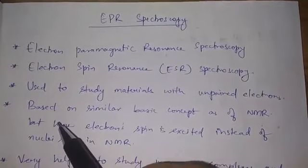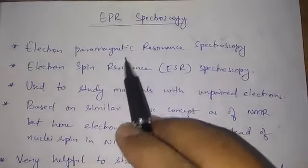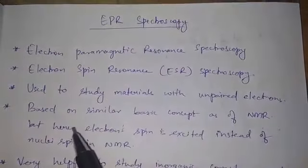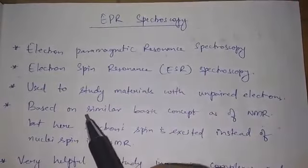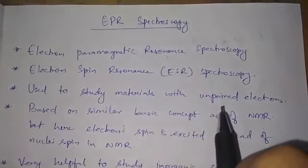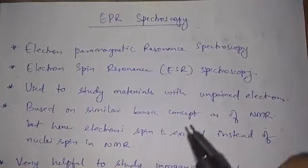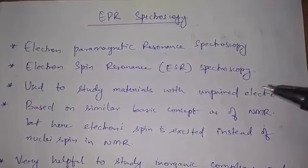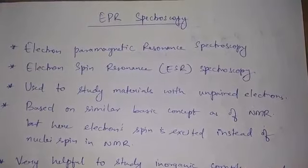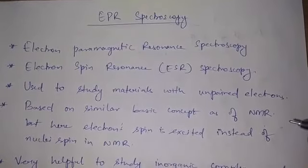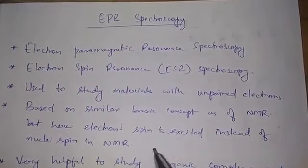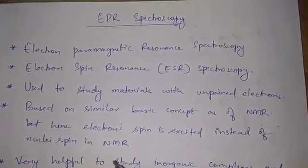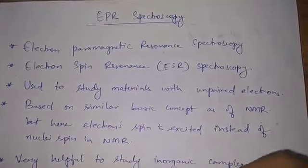EPR spectroscopy is used to study materials that have unpaired electrons. It is very important that the material has unpaired electrons — only then will it be EPR active. This is based on a similar basic concept to NMR spectroscopy, but here the electron spin is excited instead of the nuclear spin.